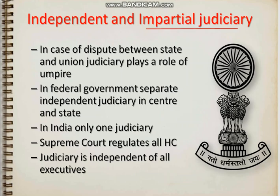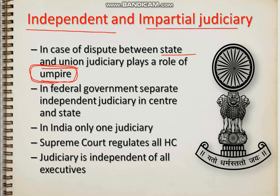Next is independent and impartial judiciary. Our democracy works on three pillars: the Legislature, the Executive, and the Judiciary. The judiciary is very important and needs to be independent and impartial. In cases of dispute between state and union, the judiciary plays an important role — like an umpire in a match. In a federal government, there is a separate independent judiciary at both center and state levels.